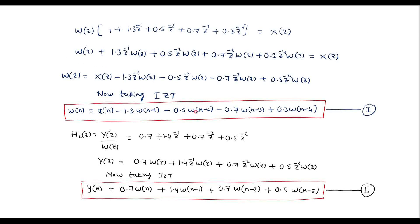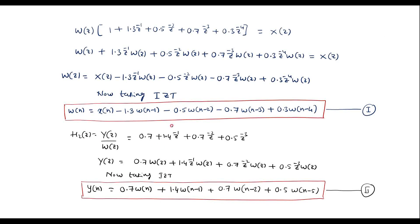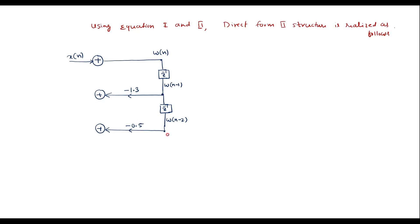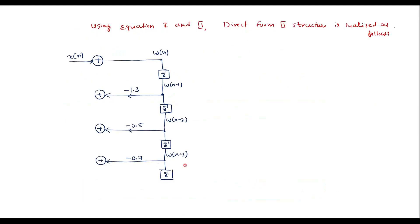Continuing with equation 1: passing w(n−2) through another delay element gives w(n−3), with multiplication factor −0.7 connected to the adder. Passing through one more delay element gives w(n−4), with multiplication factor +0.3 connected to the adder. This completes the feedback section of the diagram corresponding to equation 1.